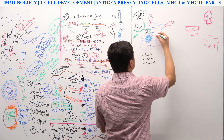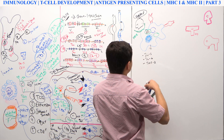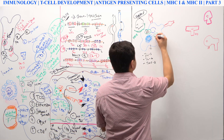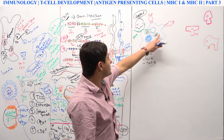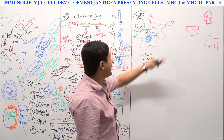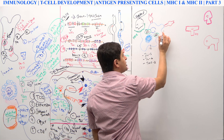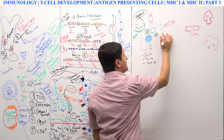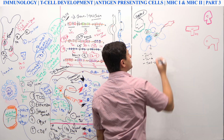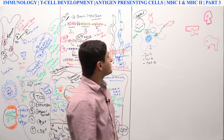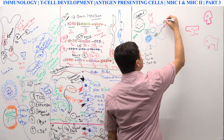After this breakdown, these pieces will go and fuse with a protein complex. If this came from the endosome, then we call this MHC2 — the major histocompatibility complex class 2.